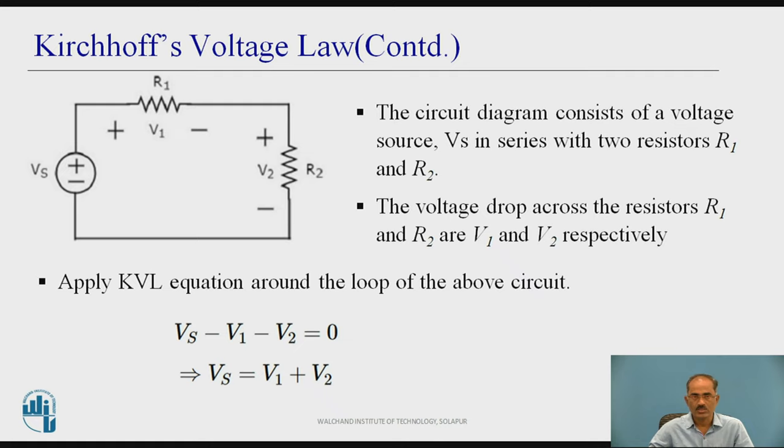Vs is equal to, because Vs is from minus to plus, that is why we need to consider plus sign. Whereas, V1 is from plus to minus, goes from higher potential to lower potential. We need to consider minus V1. Similarly, V2 is across R2 is from plus to minus, that is from higher potential to lower potential. We need to consider minus V2 is equal to 0. If you simplify this, Vs is equal to V1 plus V2.